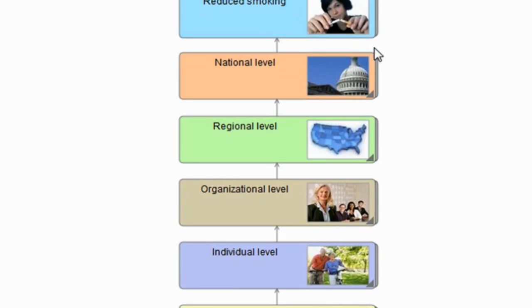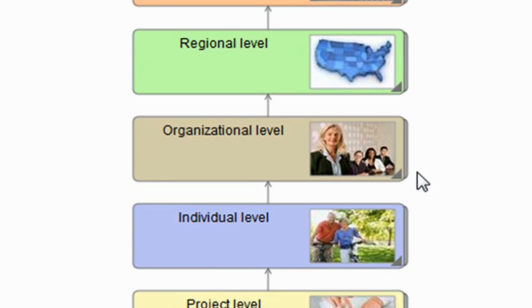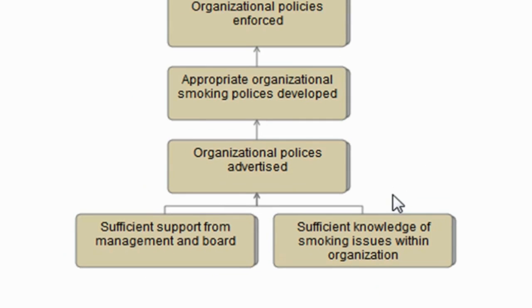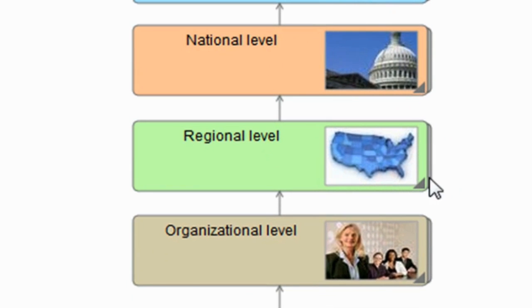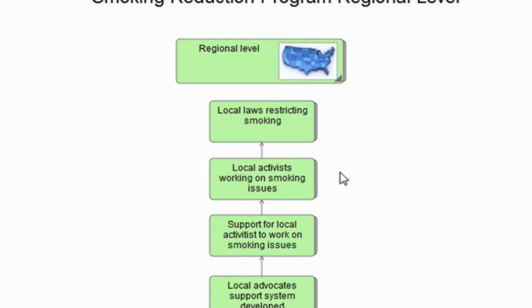Next we look at an organizational level. At the organizational level, this may be about policies which organizations may implement to reduce smoking on their sites—sports clubs, bars, etc. At a higher level again, there's a regional level, and at the regional level we're talking about things like support for local activists working on smoking issues, and that leading to local laws which may restrict smoking within that region.